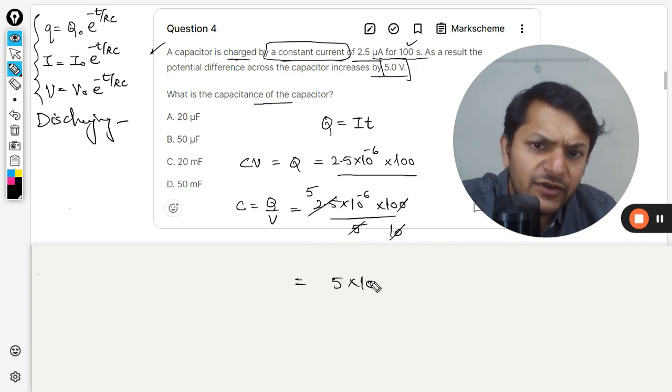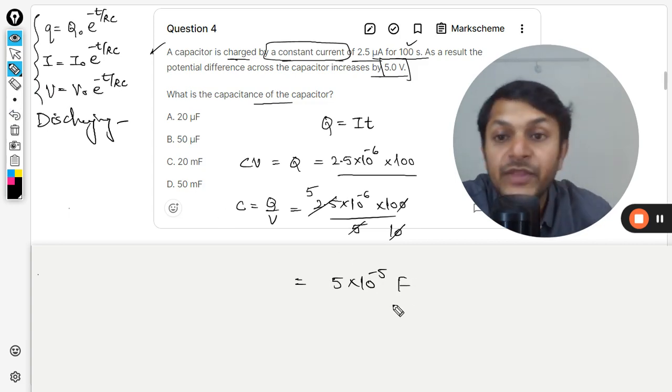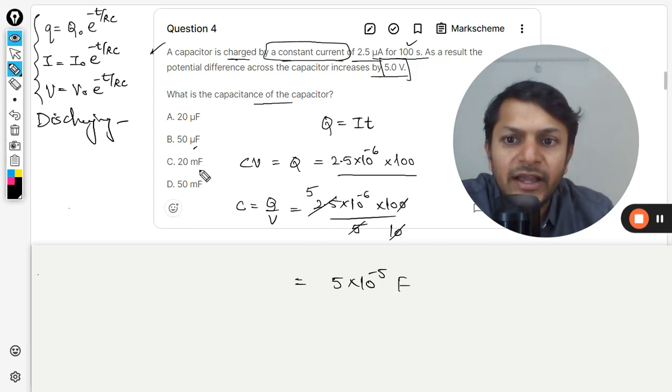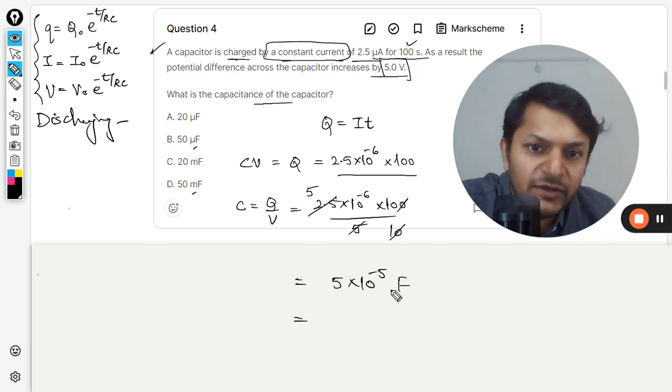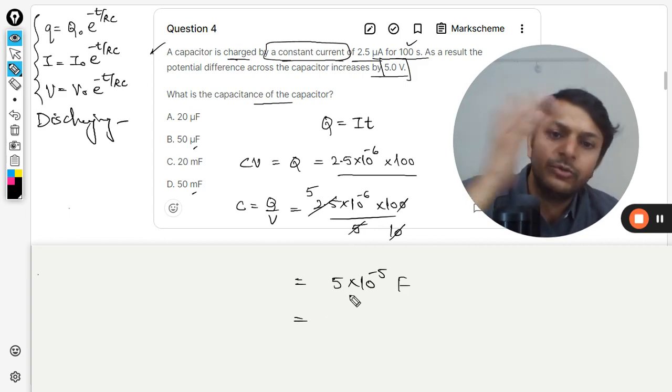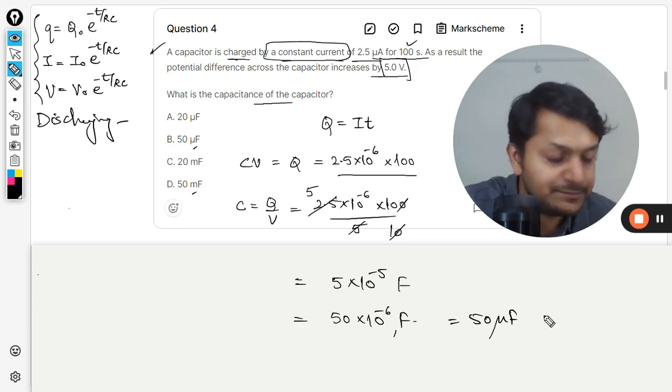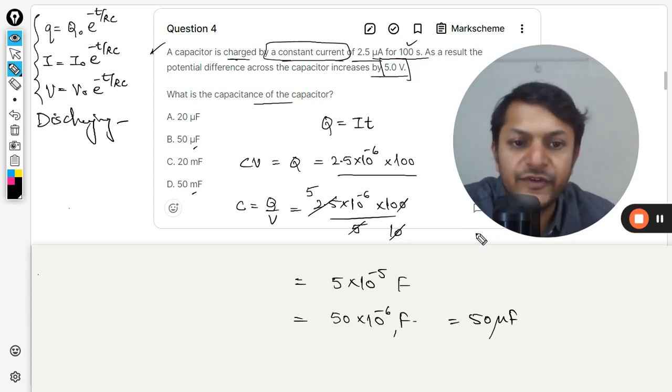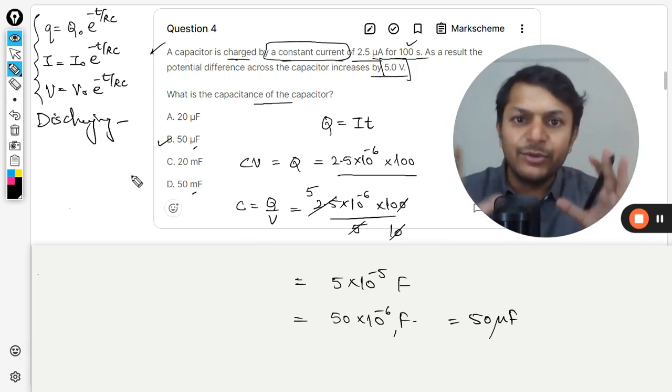So this will become 5, divided by 10 because of the decimal, and you can do the calculation later. It will become 5 × 10^(-5) farad. But the answers are in microfarad, millifarad like that, so we have to convert it to microfarad. When you multiply by 10^6 in the numerator and denominator, it will be 50 microfarad. So the answer will be B.